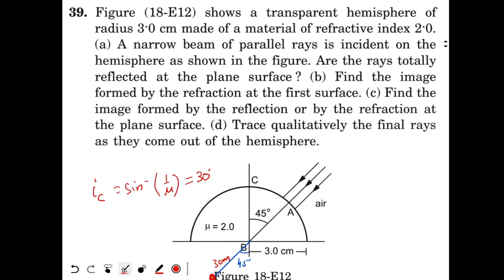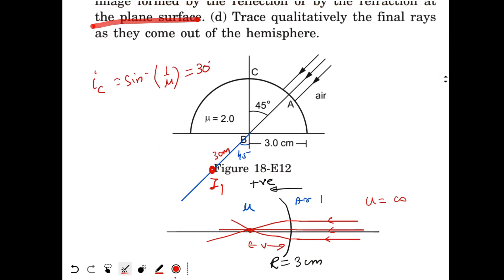Now what is part C asking? Find the image formed by the reflection or by refraction at the plane surface. So this is your image formed by the spherical surface. And this image will act as the object for this plane surface. Since the plane surface is creating reflection of the rays, it will behave like a plane mirror. And this is the object. So from the plane mirror, the image will be created.